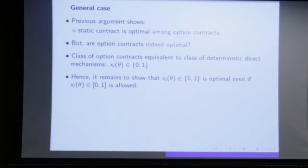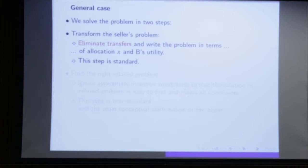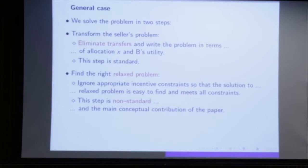We solve the stochastic contract problem in two steps. The first step is standard: rewriting the problem to get the virtual surplus formulation, eliminating the transfers, and formulating the problem in terms of virtual surplus. Then we have to identify the right incentive constraints under which we can solve our problem — we have many incentive constraints but need to find the relevant binding ones, and this is the conceptual contribution of the paper.